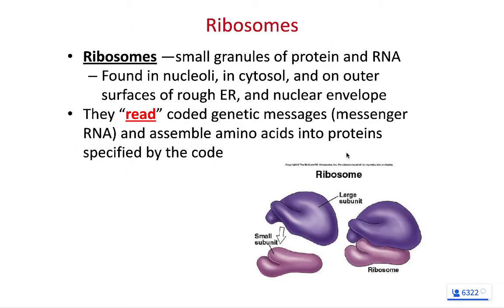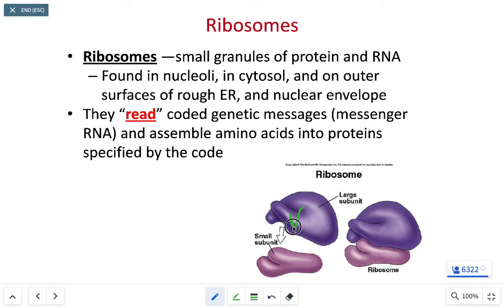Ribosomes are one of the few non-membrane-bound organelles in our cells — most organelles are covered in membranes. A ribosome is going to be made of two subunits: the large subunit and the small subunit. These subunits will clamp together — the large and the small connect to each other to form the ribosome.